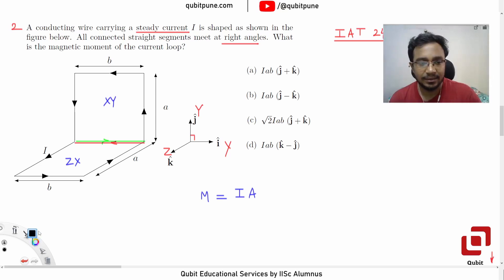So now I can say that net magnetic moment, which is a vector quantity by the way, is equal to magnetic moment of the loop in the X-Y plane plus magnetic moment of the loop in the ZX.